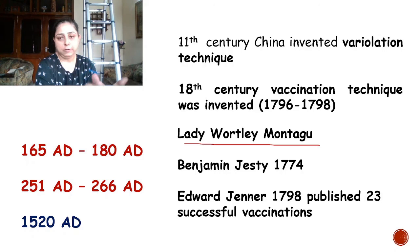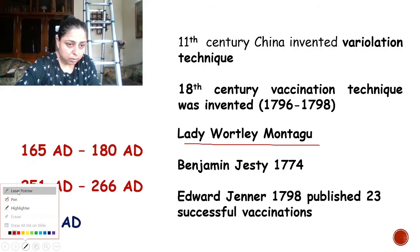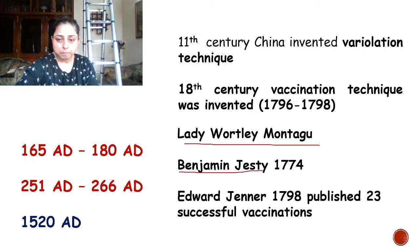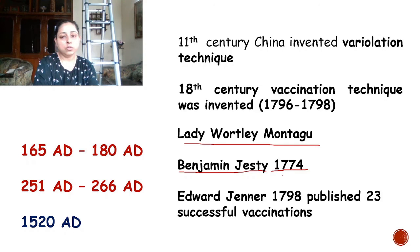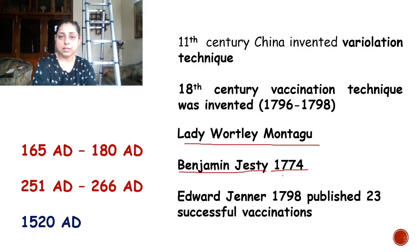During that time there was an English farmer named Benjamin Jesty. In 1774, during a smallpox epidemic in his area, Benjamin Jesty was aware of the observation that people having cowpox disease do not get smallpox. Jesty himself had previously had cowpox disease, along with two of his lady servants. He believed he had become immunized against smallpox and wanted his wife and children to also be safe from the disease.